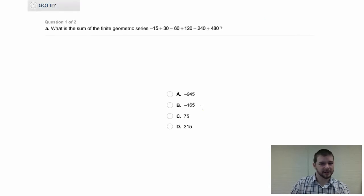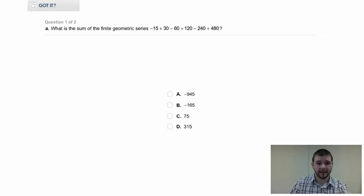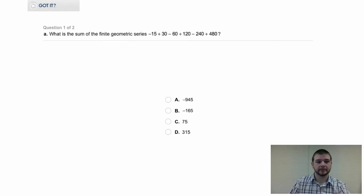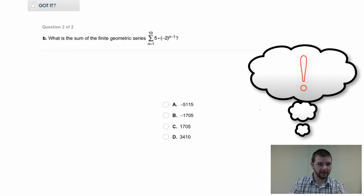Your first of two chances to show that you have got it. Question one of two. What is the sum of the finite geometric series negative 15 plus 30 minus 60 plus 120 minus 240 plus 480? A good technique would be to use the sum formula, and a backup technique to check yourself would be to actually sum these on your calculator to make sure you have the correct answer. Work carefully and make your selection from the choices below. Question one of two again. That's better.